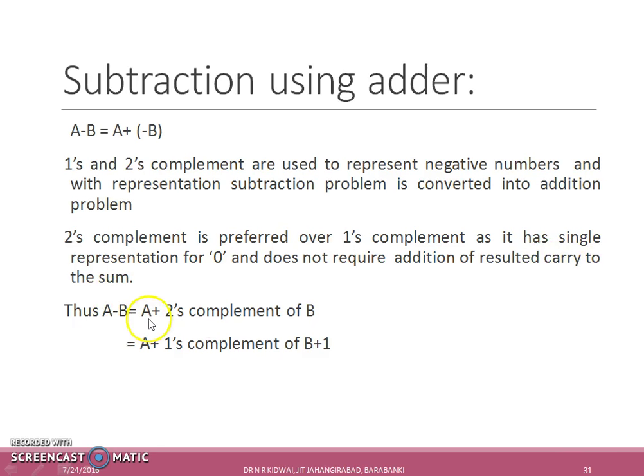Thus A minus B can be set as A plus two's complement of B. A two's complement implementation can be further done by using one's complement and adding a one to the output. Thus A minus B is equal to A plus one's complement of B plus one. The result of A minus B will be in two's complement form.